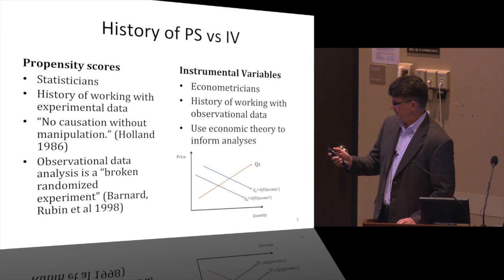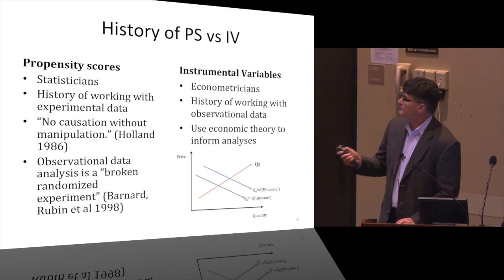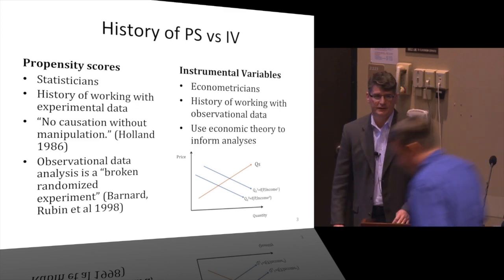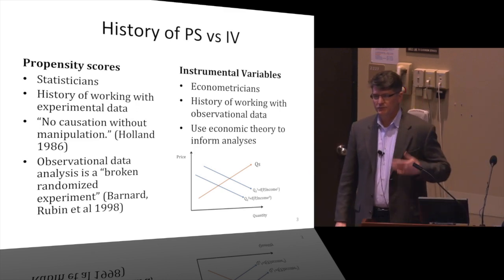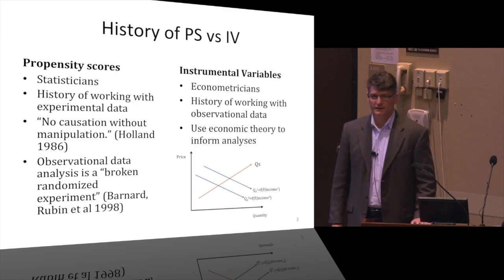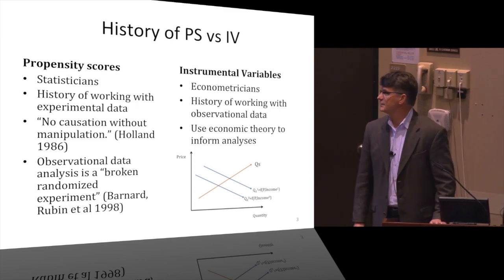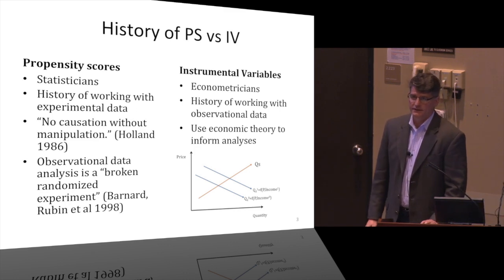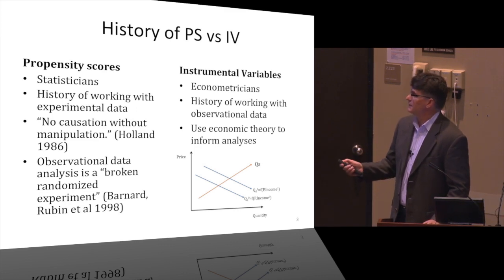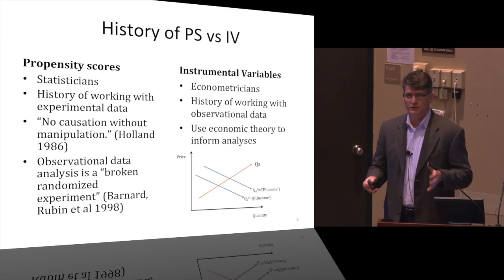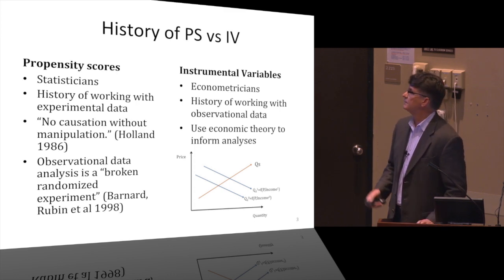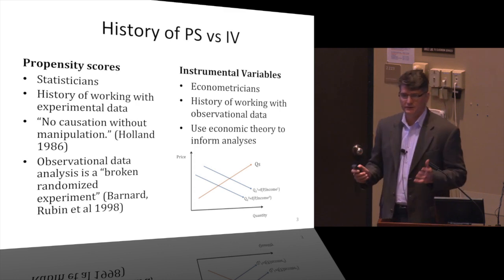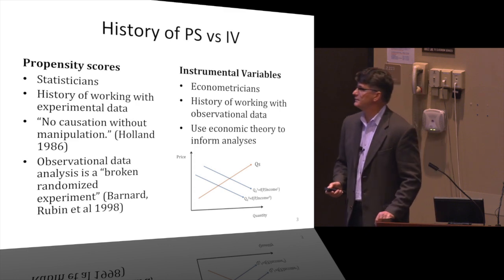The problem is that propensity scores and instrumental variables are like the Yankees and Red Sox of statistics. Some people just hate propensity scores and love instrumental variables and the other way around. Part of that might be due to the fact that they come from different disciplines — propensity scores come from statisticians, and instrumental variables come from econometricians.